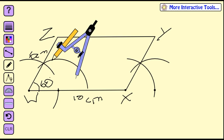Now I want you to find the point that lies on ZY and is equal distance from lines WZ and WX. To find a point that is equal distance, we have to cut this angle in half — meaning we have to bisect it. So we're going to bisect it.